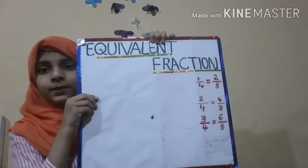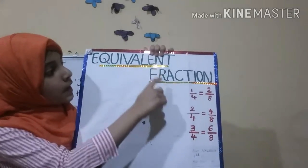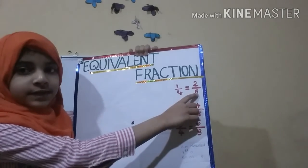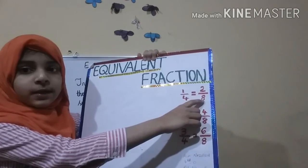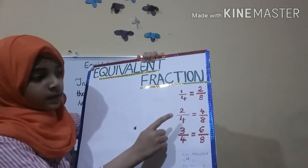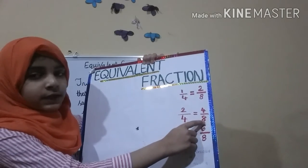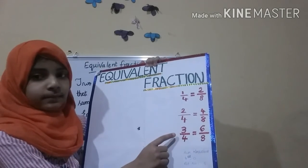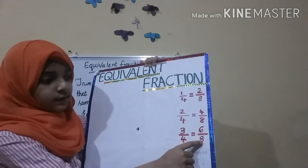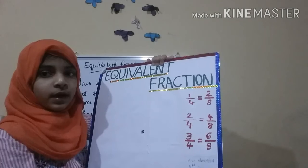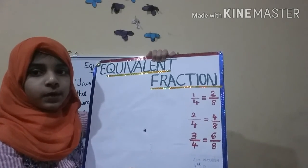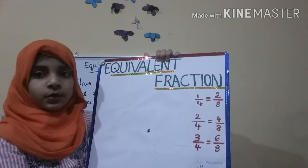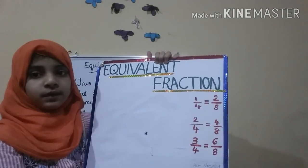Now friends, take a look at this model summarizing equivalent fractions. 1 by 4 or quarter is equivalent to 2 by 8 — we saw that with the fraction wheel. Then 2 by 4 and 4 by 8 are also equivalent fractions. Another example is 3 by 4 and 6 by 8 — both are equivalent fractions. Hope you all have understood about equivalent fractions and learned something new in this episode.